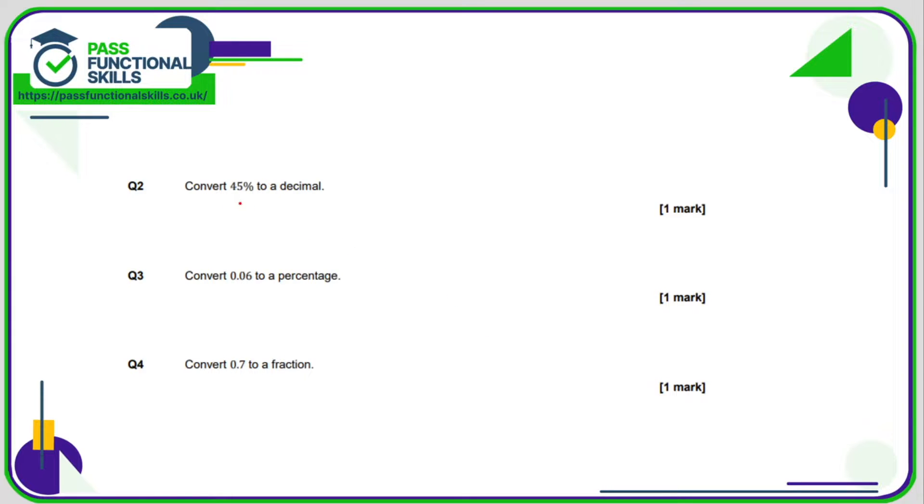Question number two. Convert 45% to a decimal. So percentage to decimal we are dividing by 100. So that is 0.45.